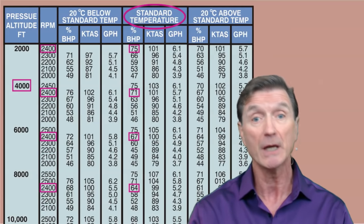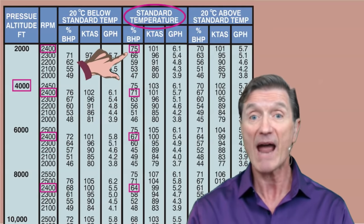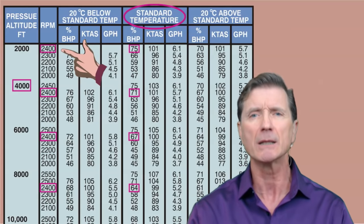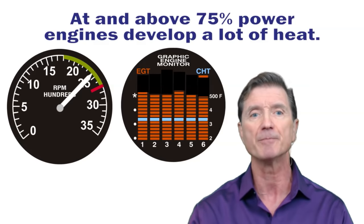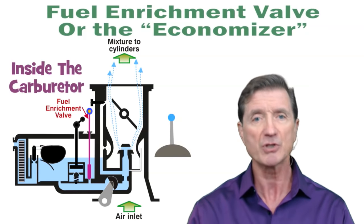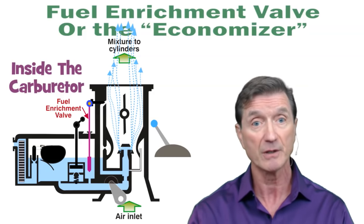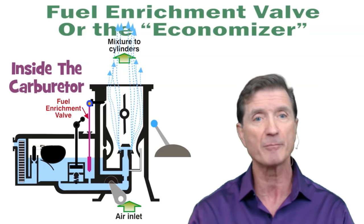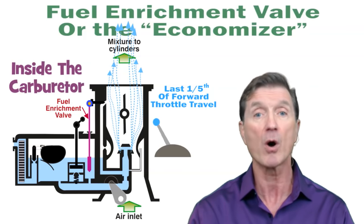For the most part, you just can't pump too much fuel into the engine at sea level. Because at density altitudes below 4,000 feet, your typical airplane engine can develop 75% or more of its maximum rated power. Now at or above 75% power, the engine develops a lot of heat and it counts on cool fuel entering its combustion chambers to help cool the engine. This is why all engines have something known as a fuel enrichment valve, which allows approximately 15% more fuel to flow into the engine than is needed for normal combustion when the throttle is moved to its full forward or takeoff position. This throttle position is typically the last one-fifth of forward throttle travel.